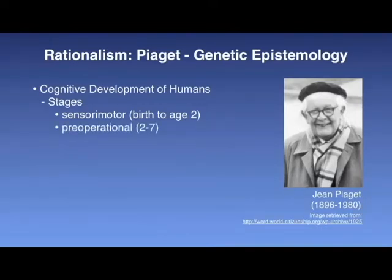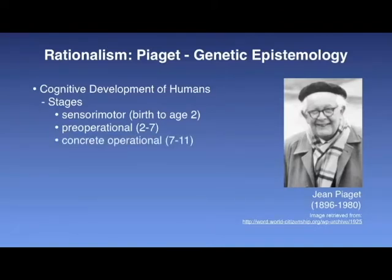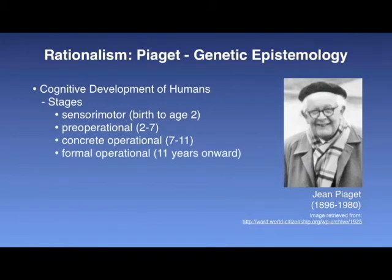In the preoperational stage, the child begins to represent ideas and concepts with words and images. However, the child is not able to perform operations, or must complete processes using physical objects. The third stage is concrete operational, from ages 7 through 11. The child begins to use logic, but is limited to solving problems involving physical objects, and is able to take another's point of view. And finally, formal operational, 11 years onwards. Individuals begin to think abstractly, they reason logically, and are able to draw conclusions based on the information that is available.